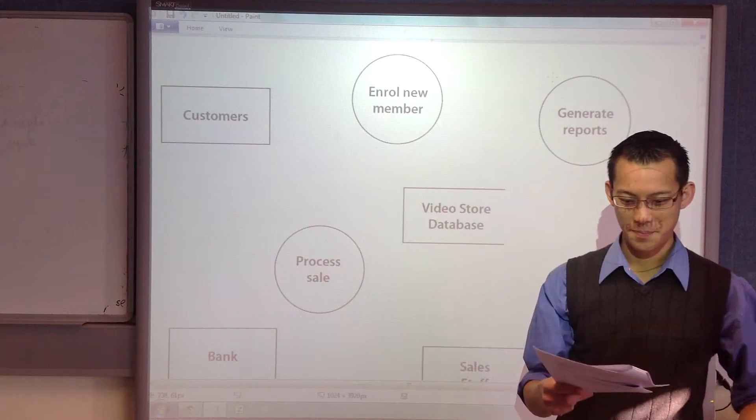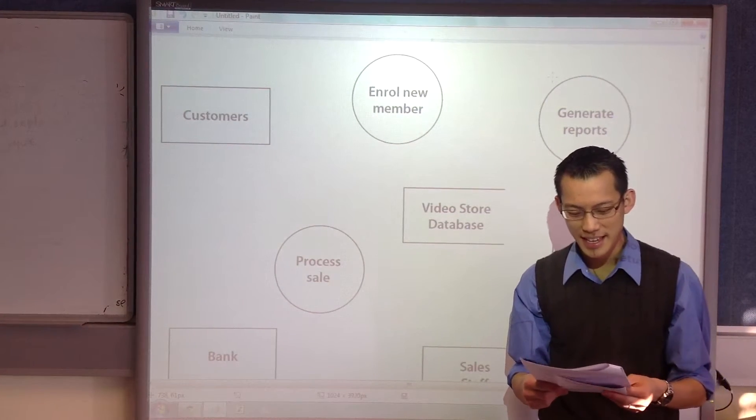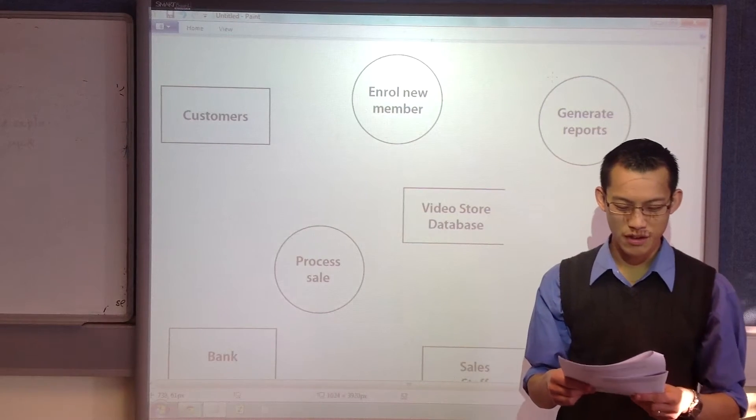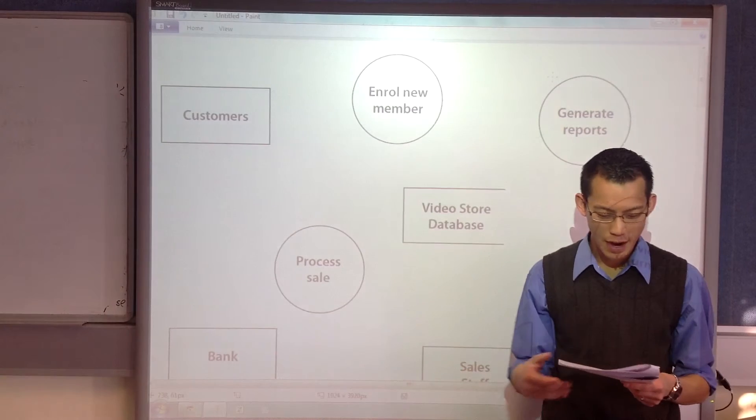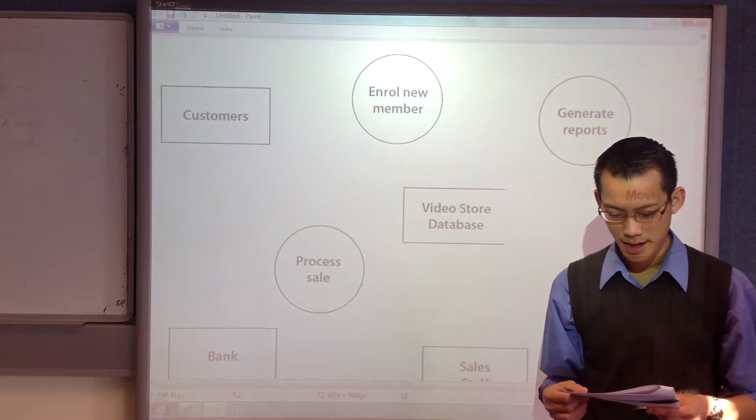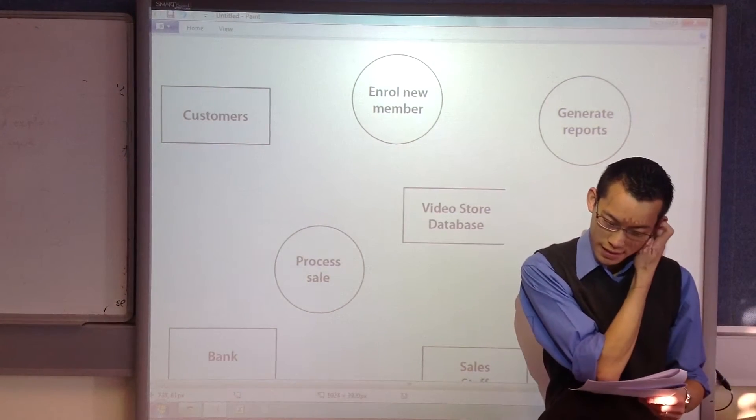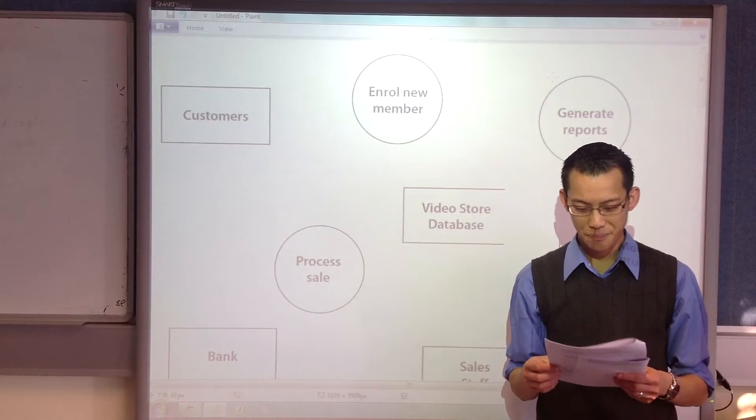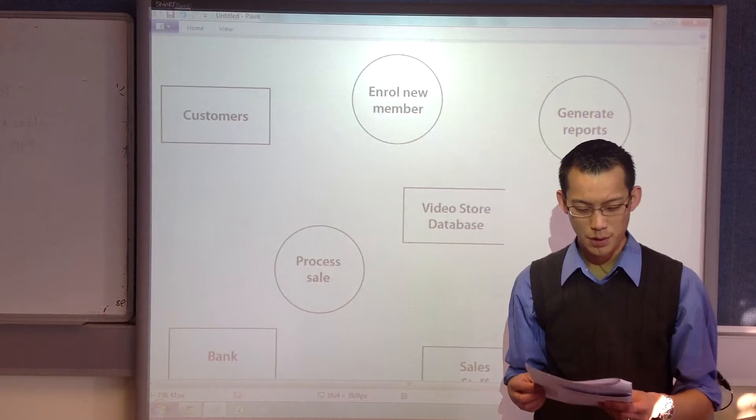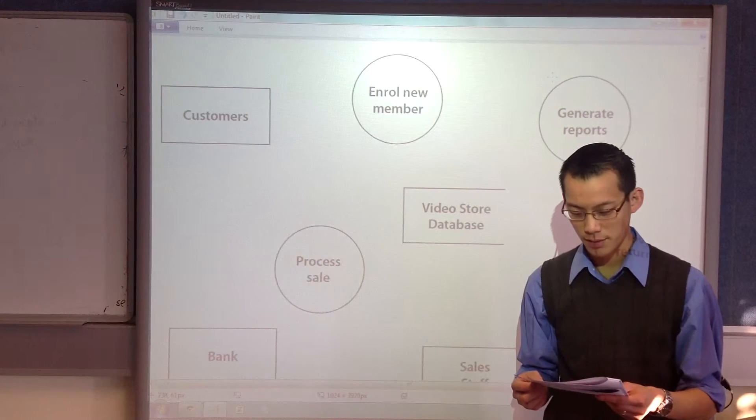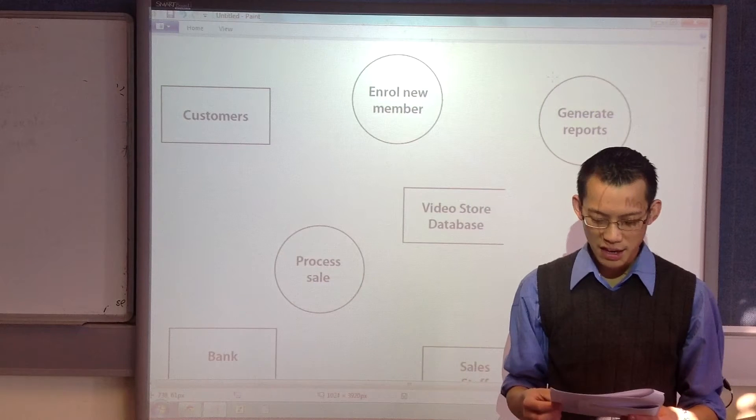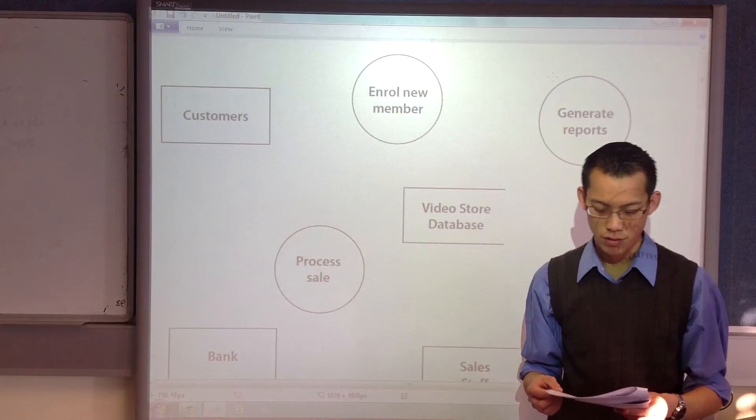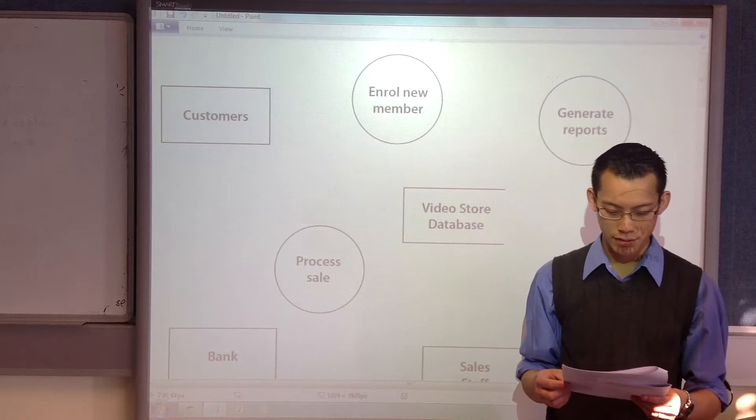There's a database question to begin with. A small video store records details of its customers and the videos and DVDs they have borrowed using vStore, a software application which is connected to a database. The store has a single personal computer attached to a cash drawer, barcode scanner, and printer. The sales staff use the computer when enrolling new members, processing sales, and entering returned movies.